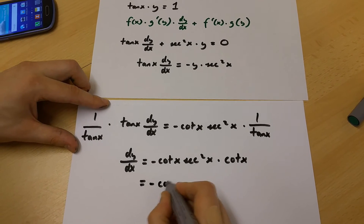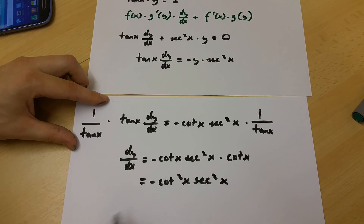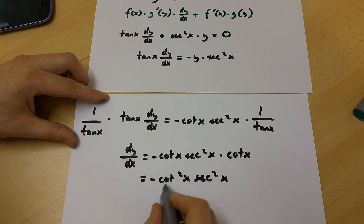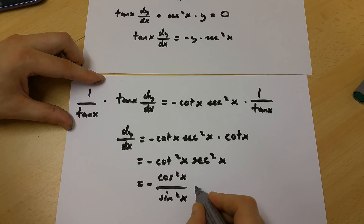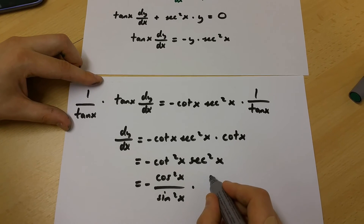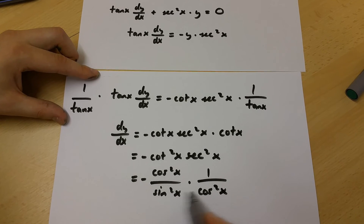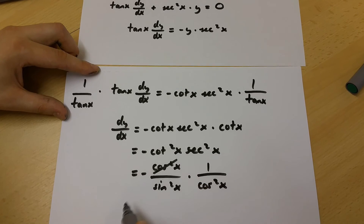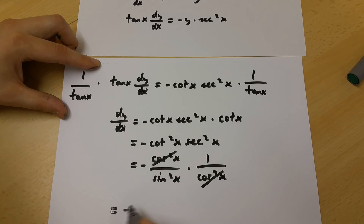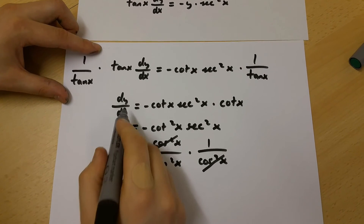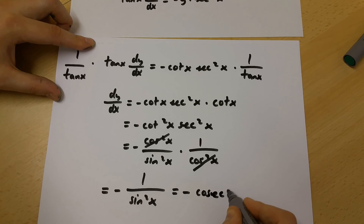So we've got minus cot x squared multiplied by sec x squared as dy over dx. This can be simplified further. Cot x squared is cos x squared over sin x squared, and sec x squared is 1 over cos x squared. We can cancel the cos x squared terms, leaving minus 1 over sin x squared as dy over dx. But this is in fact minus cosec x squared.